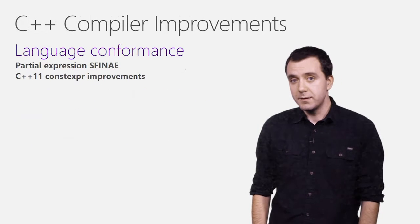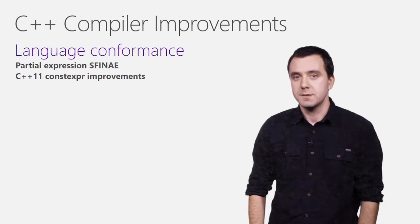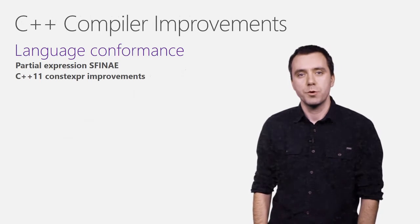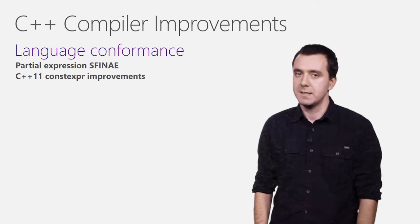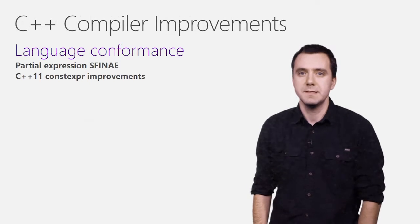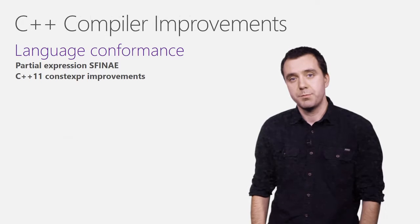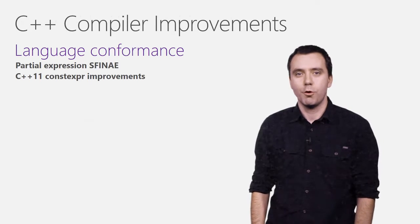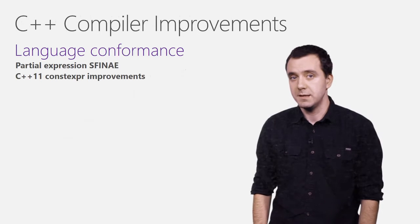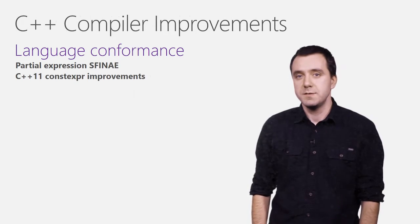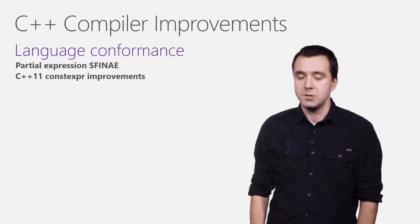In the compiler, we're continuing to make progress on our language conformance. In Update 1, we're introducing support for expressions SFINAE. For example, code constructs using dependent decltype types and default arguments of template type parameters are now supported among other constructs. We've also made improvements in our C++11 constexpr support. The vast majority of scenarios you reported via Connect are now addressed, as well as static initialization.